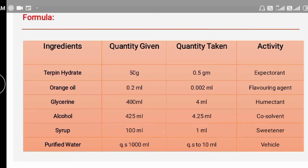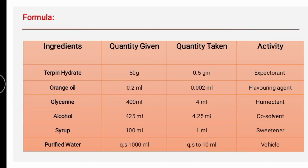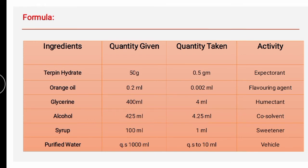Now the formula: the first ingredient is terpene hydrate, which is the active in the formulation. Its activity is expectorant, used in treatment of conditions like pneumonia, bronchitis, and bronchiectasis to loosen mucus. The second ingredient is orange oil, acting as a flavoring agent. Other flavorants that can be used include lemon syrup, fruit-flavored syrup, tolu syrup, and blackcurrant syrup. Glycerine is the third ingredient, acting as a humectant — something which keeps the preparation moist.